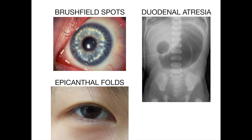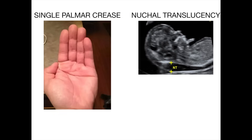A single palmar crease, also called a simian crease, is one horizontal crease on the palm. Most people have more than one, and having one doesn't necessarily mean Down syndrome, but it's commonly found in patients who do. Nuchal translucency is the space seen just behind the head when screening in utero, and is very classically associated with Down syndrome.